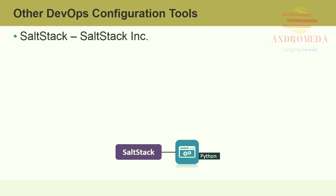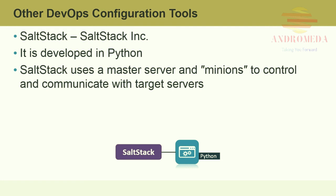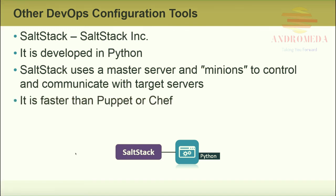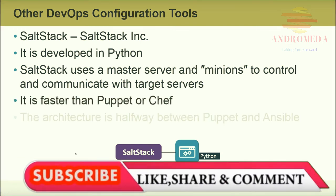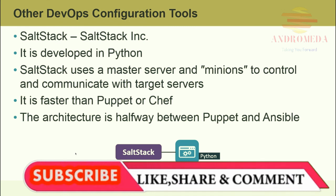SaltStack by SaltStack Incorporated is a Python-based configuration management tool. It creates Python modules that handle most of the configuration aspects of a salt system. The SaltStack community is growing and its documentation is pretty easy to learn. SaltStack is designed to be simple yet scalable, uses a master server architecture with minions to control communication with target servers. It's faster than Puppet or Chef, and its architecture is halfway between Puppet and Ansible.